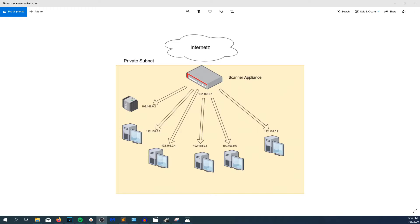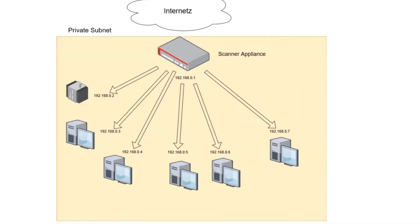I made two quick diagrams explaining the difference between credentialed scanning and agent scanning. What we're looking at right here is credentialed scanning. You have a scanner appliance in the private network, and it's scanning all the devices within that private network — a few workstations, and also a random device like an ICS device. The benefit of credentialed scanning is you can scan appliances like ICS and random devices that agents simply cannot be installed on.